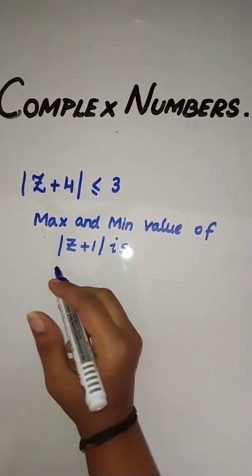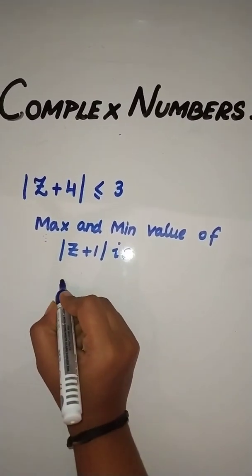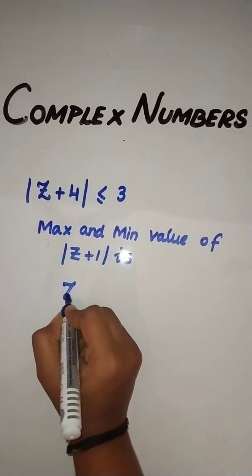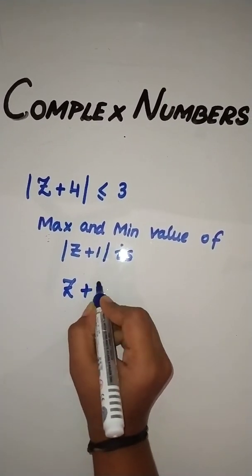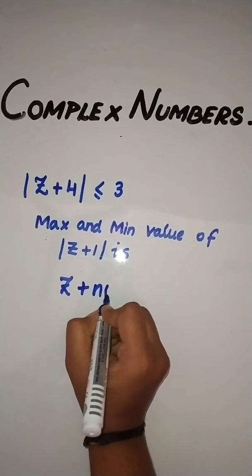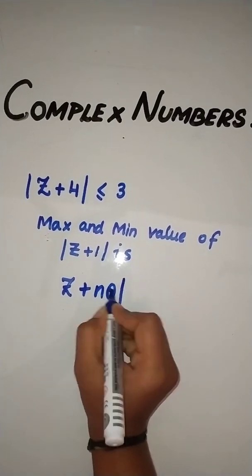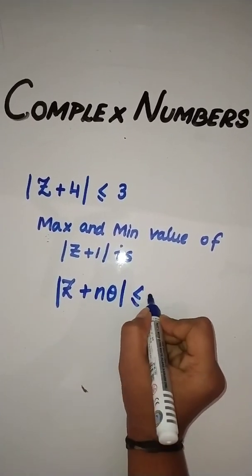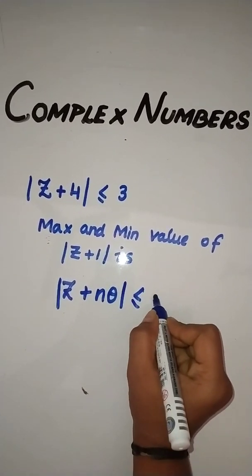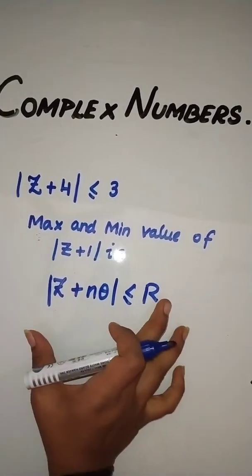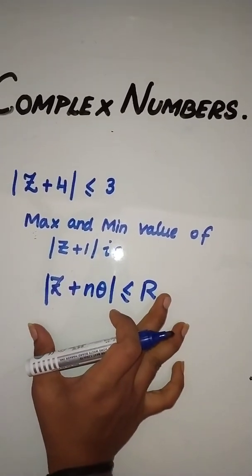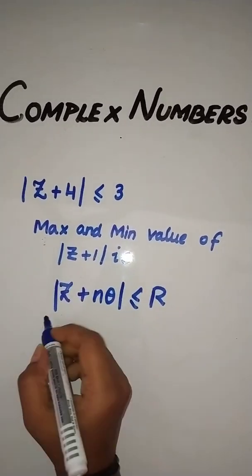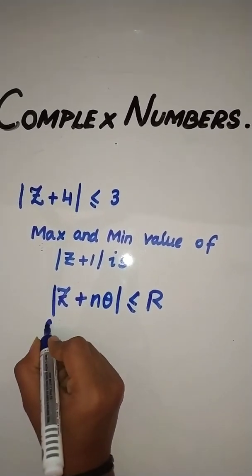The trick is: z plus whatever number they have given should be always less than or equal to the real number. This is the condition for this trick to be applicable.